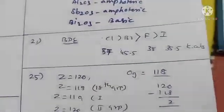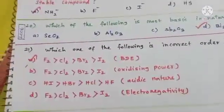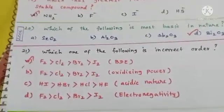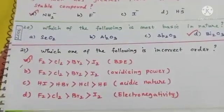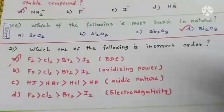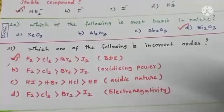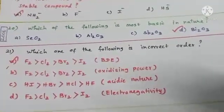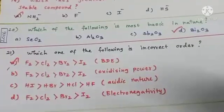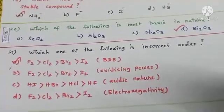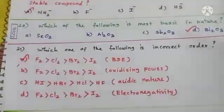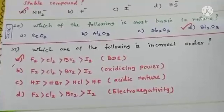The correct bond dissociation energy order is Cl₂ > Br₂ > F₂ > I₂. Option B, oxidizing power F > Cl > Br > I, is correct — oxidizing property decreases down the group. Option C, acidic nature HI > HBr > HCl > HF, is also correct — HF is weakly acidic due to intermolecular hydrogen bonding, and acidic nature increases down the group.